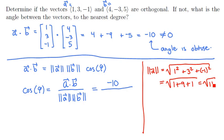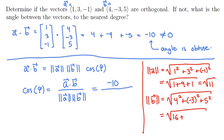And we can do the same thing with B. The length of B is going to be the square root of 4 squared plus negative 3 squared plus 5 squared. That's the square root of 16 plus 9 plus 25 for a grand total of the square root of 50, or if you want to simplify, 5 root 2.